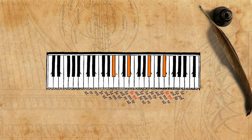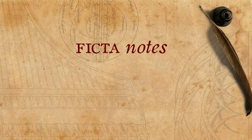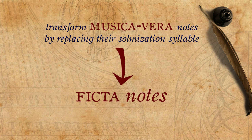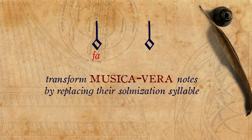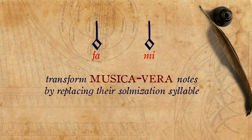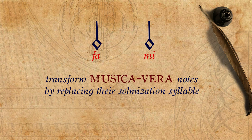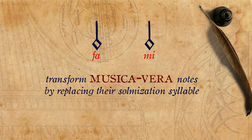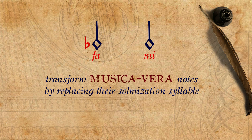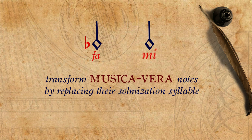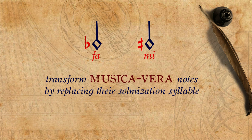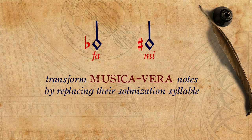Now, in order to arrive at ficta notes, one can transform musica vera notes by replacing their solmization syllable. One can apply the syllable fa or mi to notes that normally don't have these syllables, and by that change their category. Using a fa syllable on a certain note is equivalent to adding a flat to it, and using a mi syllable is equivalent to adding a sharp — or if it's used on the note B-flat, it will cancel the flat.